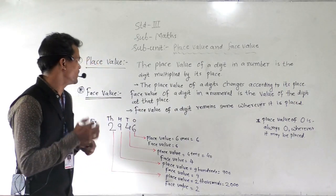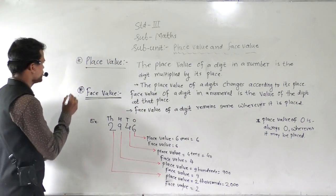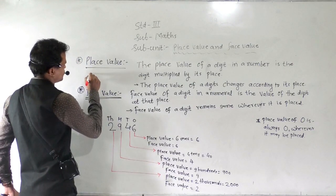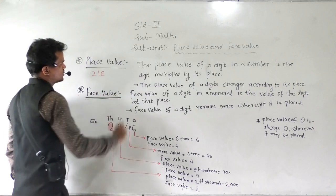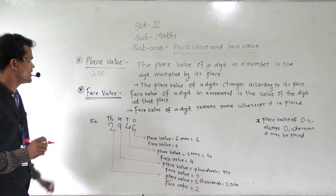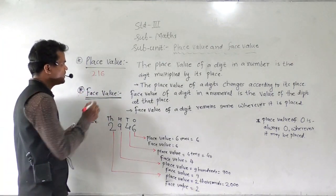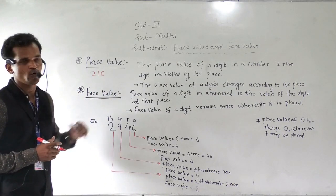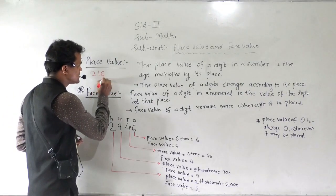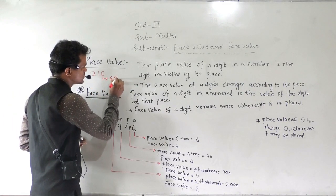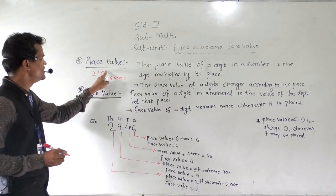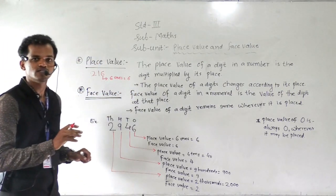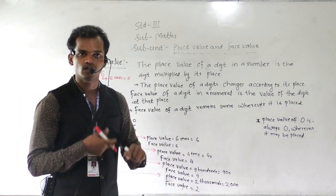Let's see one example. I am writing here the number 216. In this number, 6 comes at the ones place. So what will be the place value of that 6? It will be 6 ones. So place value of this 6 will be 6, because place value depends on place.